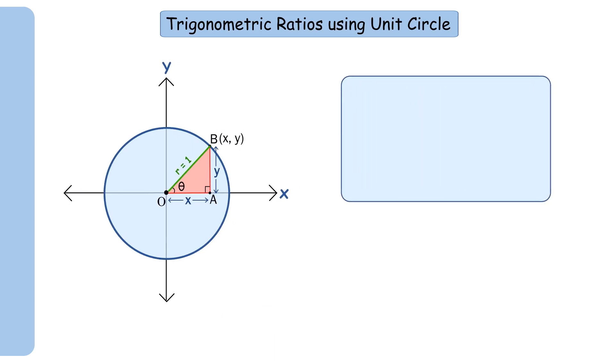Let us see how. In triangle OAB, by Pythagoras theorem, x squared plus y squared is equal to 1. As sin theta is equal to y and cos theta is equal to x, we can say sin squared theta plus cos squared theta is equal to 1.